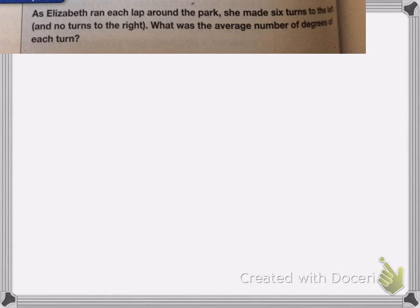All right, on this one, we have Elizabeth is running a lap around the park. She made six turns to the left and no turns to the right. And I want to know the average number of degrees of each turn. Well, if she turned six times around the park, that means she must have turned some kind of shape that has six sides.